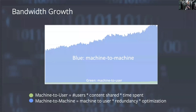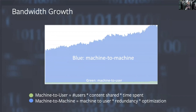A little bit about the data growth in the data centers. This chart shows machine-to-user traffic and machine-to-machine traffic — the green line at the bottom is machine-to-user. That has been growing steadily as the number of users increases and the content they share increases. But that's completely dwarfed by machine-to-machine traffic — it's about 25 times more bandwidth moving around inside a data center compared to what actually goes out to an end user. A lot of that is machine learning, plus redundancy and backup.